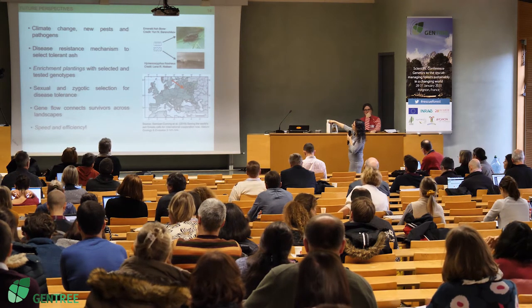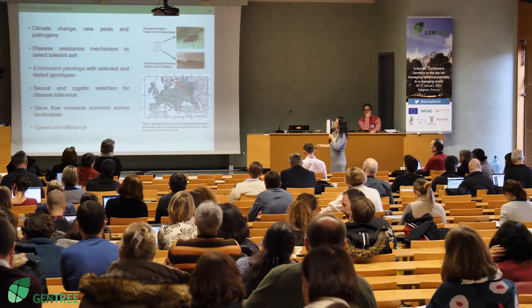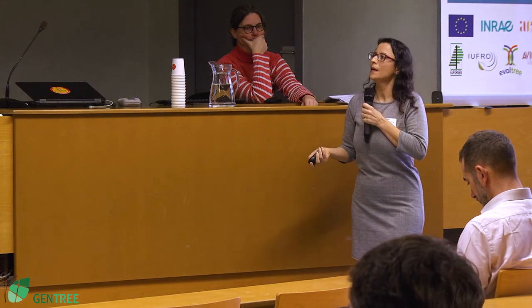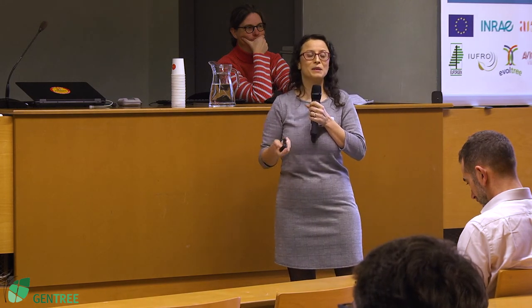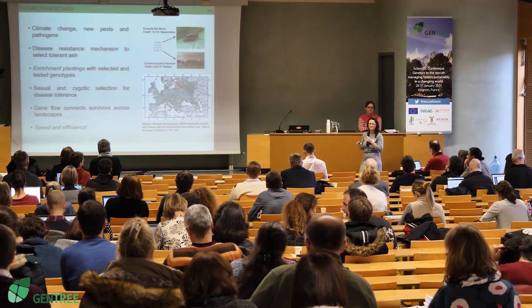The emerald ash borer is coming towards Europe, which will present another problem. We need to understand disease mechanisms better. In the meantime, we can think about whether enrichment plantings can support the ongoing natural selection in ash. Most importantly, the true recovery of the species will depend on the speed and efficiency of all kinds of landscape processes. Thank you.